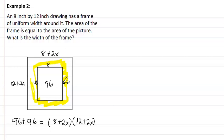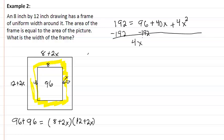We know that this area inside the picture frame equals the actual picture, so that means we are going to add 96 to this side also. So we are going to get 192 equal to 96 plus 40X plus 4X squared. We will subtract 192 and put this in order, and we are going to get 4X squared plus 40X minus 96. These are all divisible by 4.